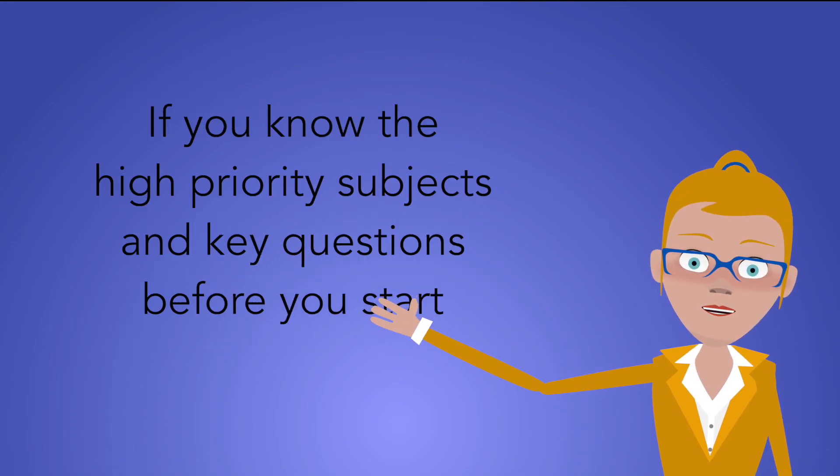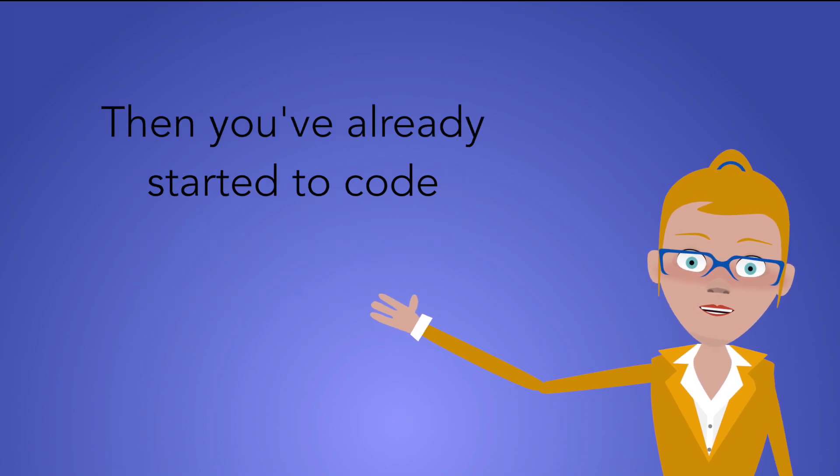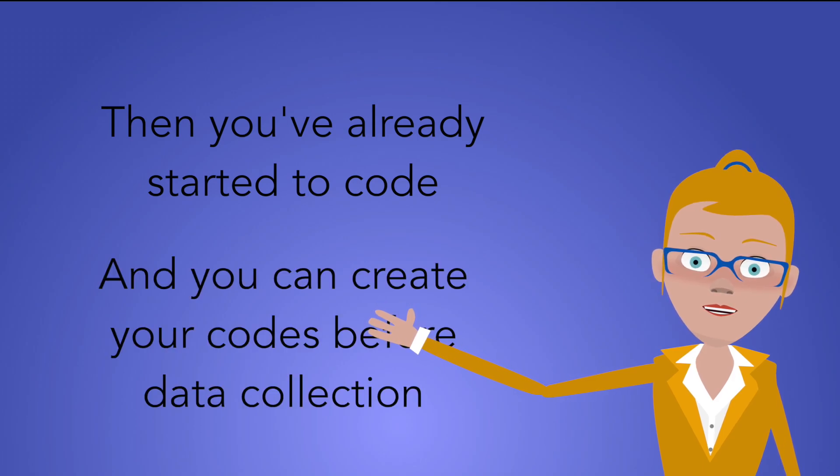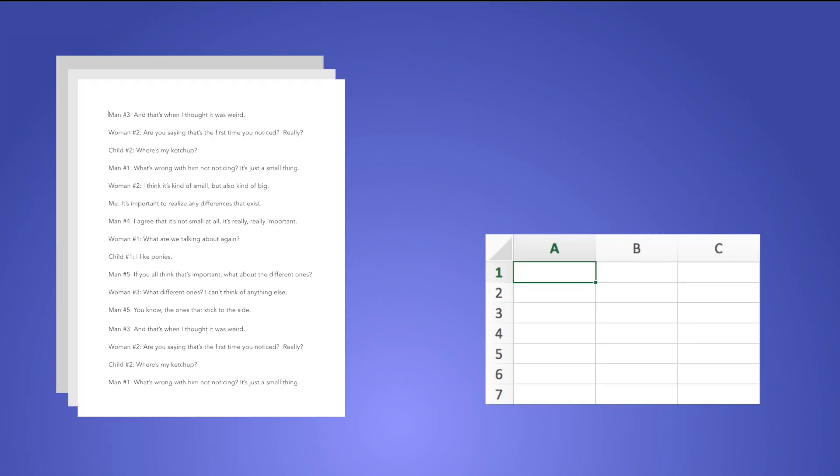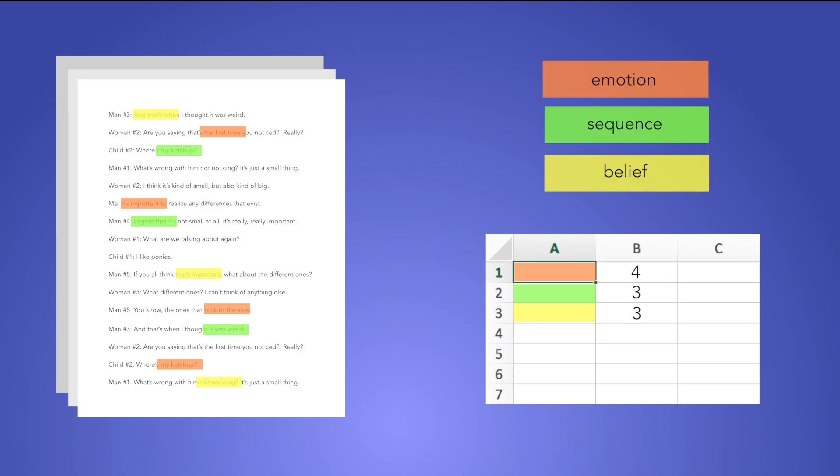So if you know which questions are important, if you know what you're going to focus on, then you've already done some coding in your head. And in that case, you can predefine your codes and say, I'm going to code on emotion. I'm going to code on X, Y, and Z. You can assign that code a color or a number or whatever, and then you can go in to the text and code that way so that you're just marking it according to the code.